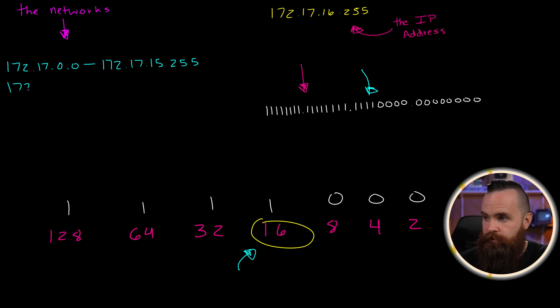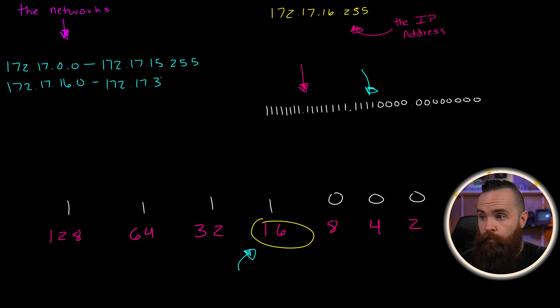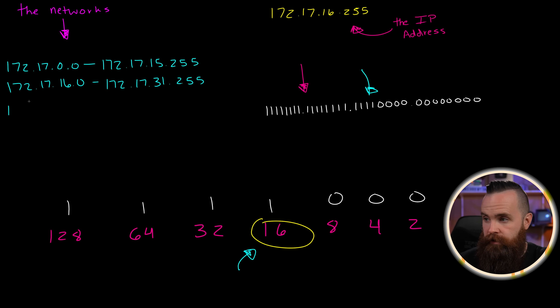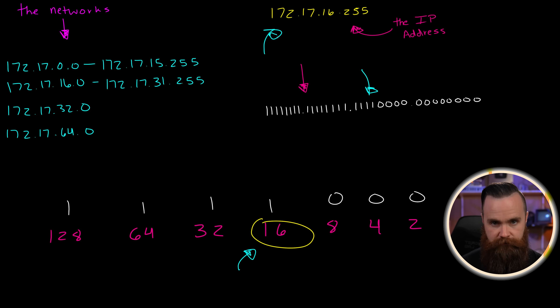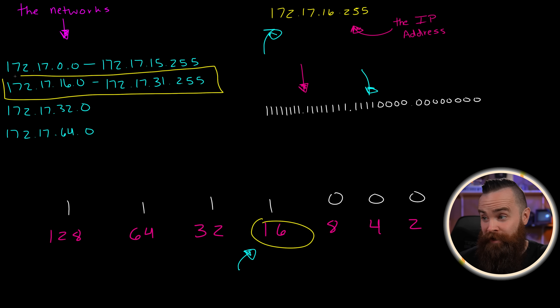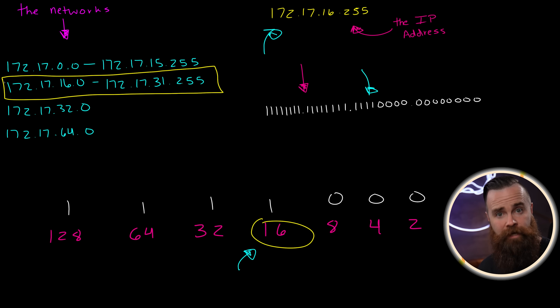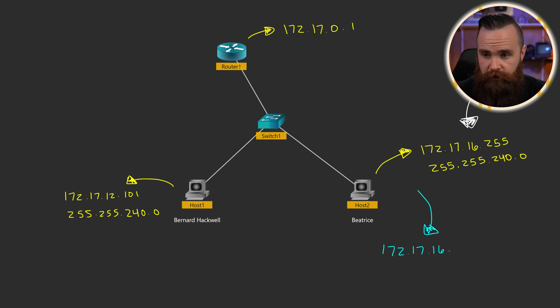Starting again: 172.17.16.0 through 172.17.31.255. A shortcut is you don't have to do the entire range — just keep incrementing the network address: 32.0, 64.0, and so on. So where does Beatrice's IP address live? Not the first network — it's nestled safely inside the second network. You may have noticed that's a lot of IP addresses; you normally won't have a network that big in the real world, but this is just for examples to make you think.